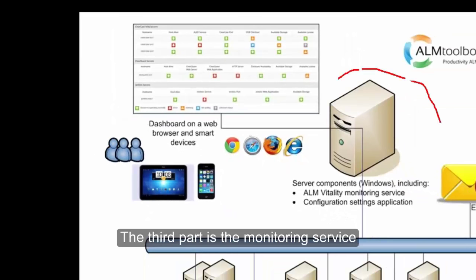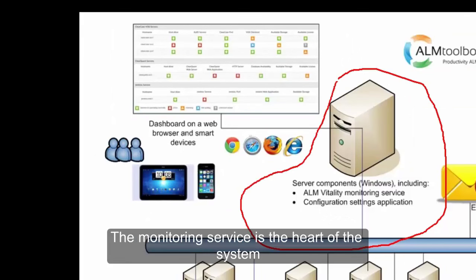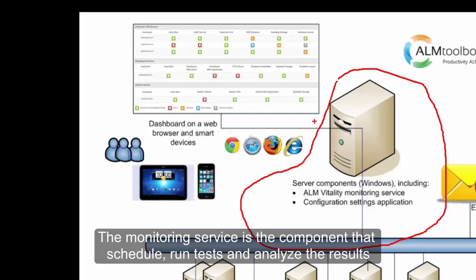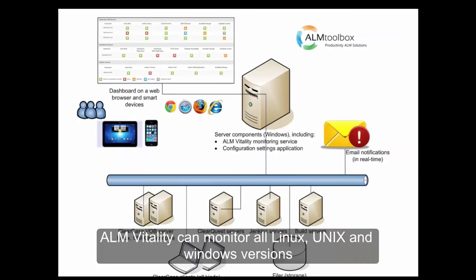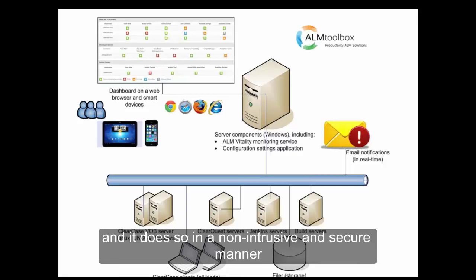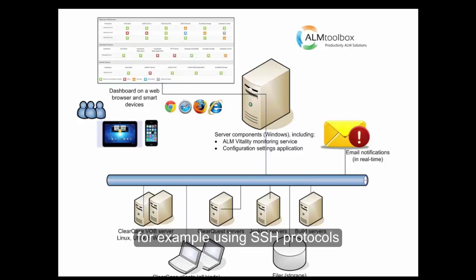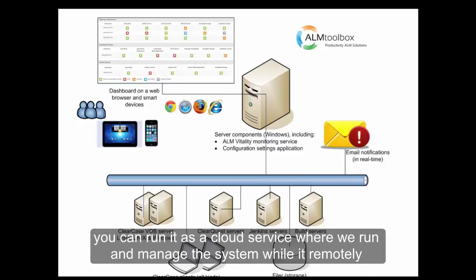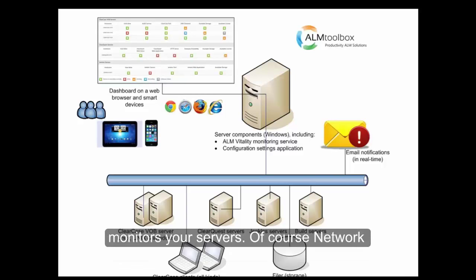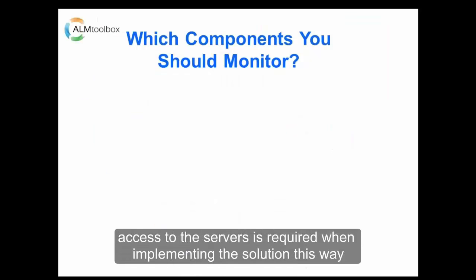The third part is the monitoring service, which is the heart of the system. The monitoring service is the component that schedules, runs tests, and analyzes the results. ALM Vitality can monitor all Linux, Unix, and Windows versions, and it does so in a non-intrusive and secure manner — for example, using SSH protocols. ALM Vitality is installed on a Windows host and can be run on-premise, or you can run it as a cloud service where we run and manage the system while it remotely monitors your servers. Network access to the service is required when implementing the solution this way.